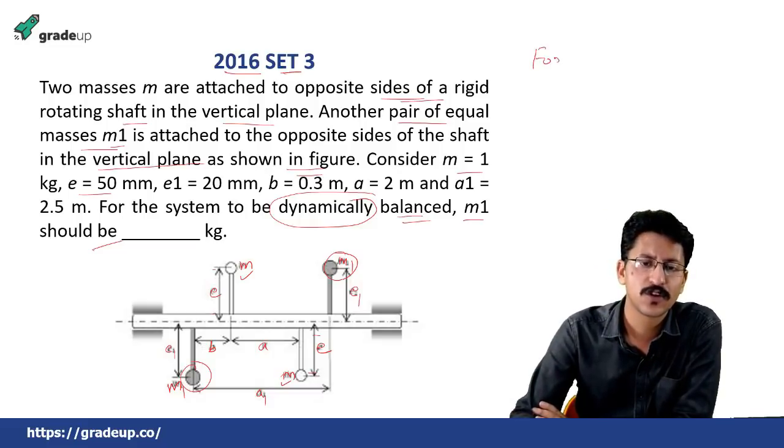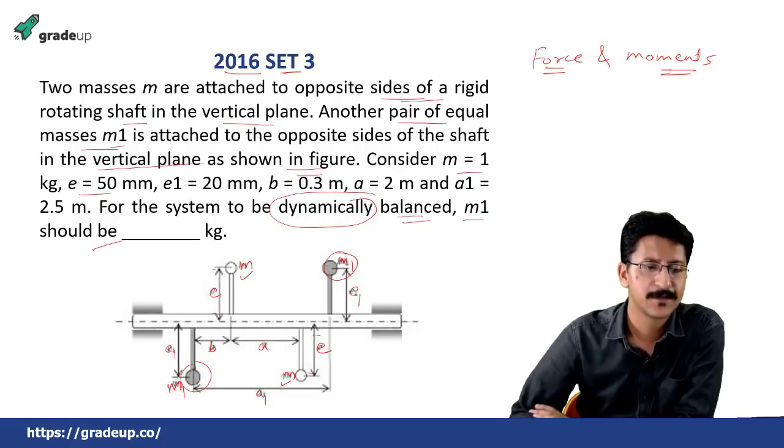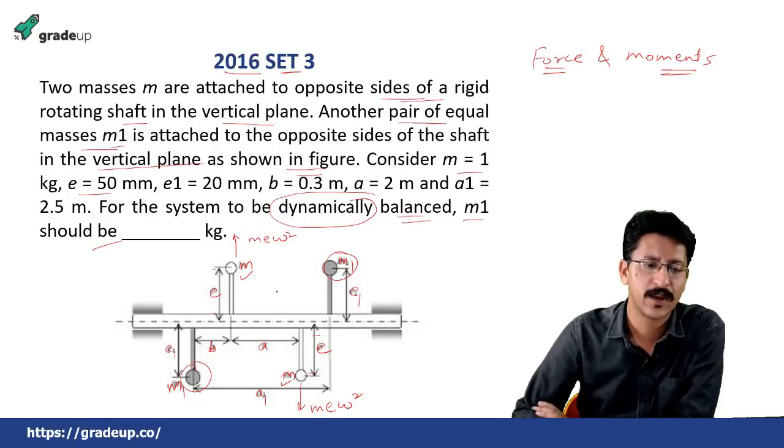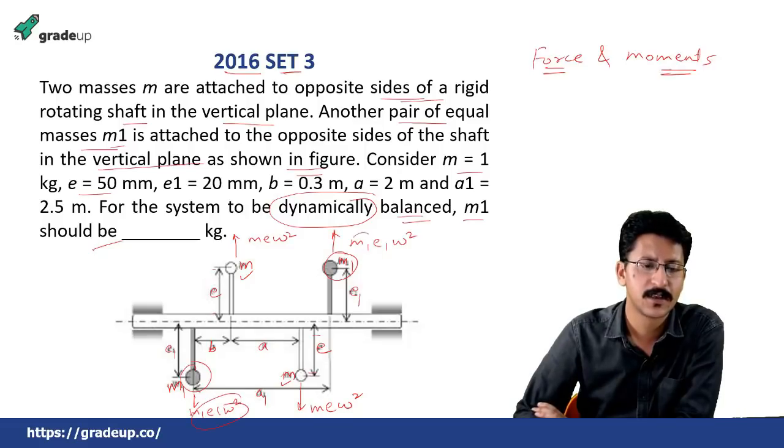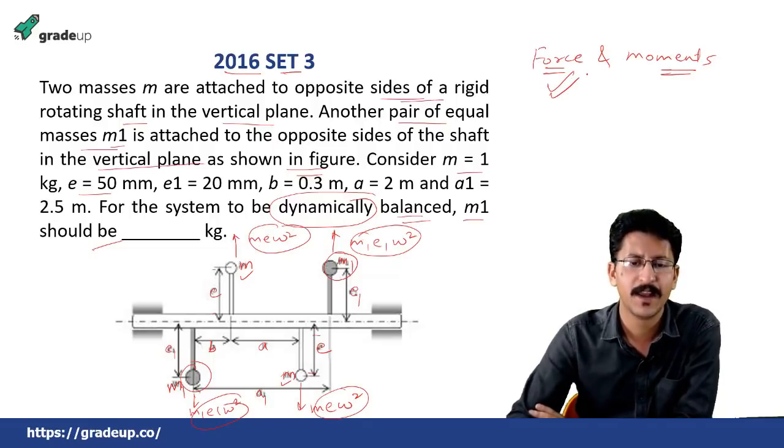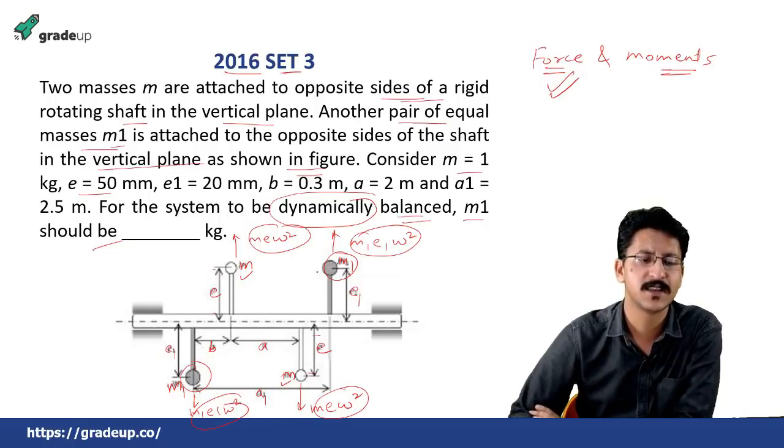We need to balance the force also and the moments also in the case of dynamic balancing. But you will see as m e, m e, opposite side, the force acting here m e omega square and here m e omega square gets cancelled. So the net balance or the net forces are already balanced in this case.